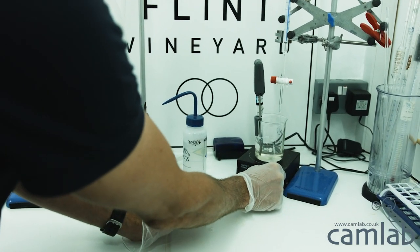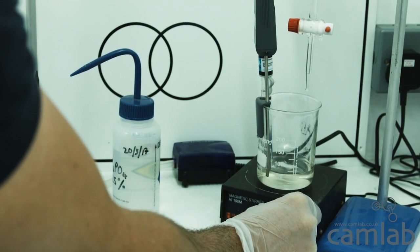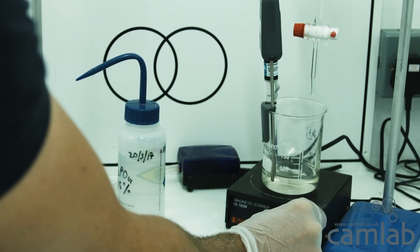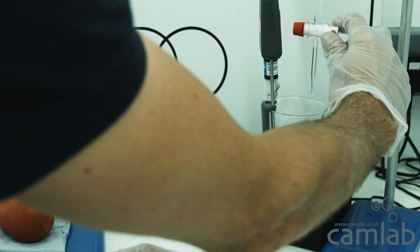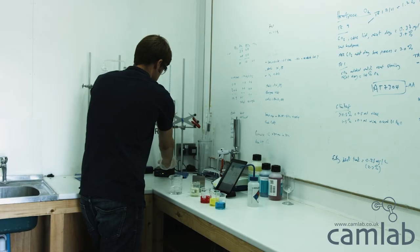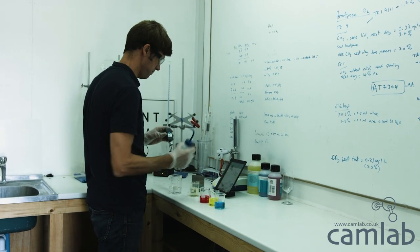We do that by titrating the wine acids against sodium hydroxide. I can clip that onto the side of the beaker and titrate directly into that, and I don't have to move the whole meter as well.